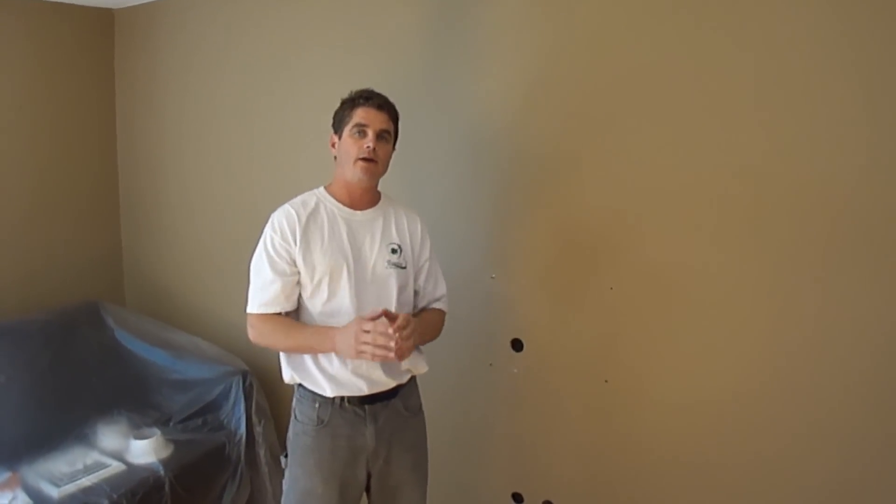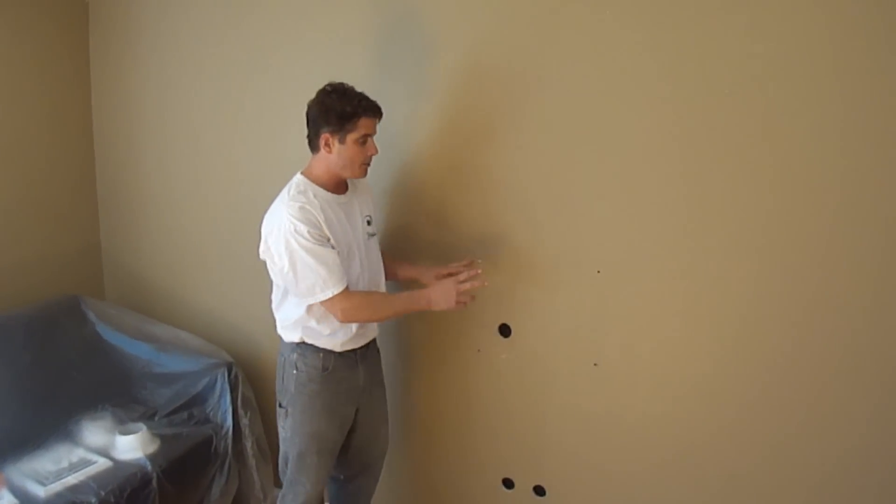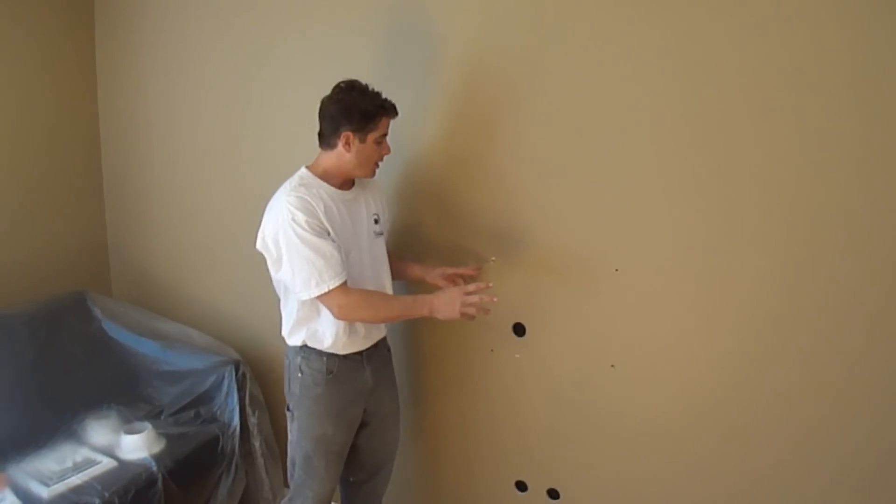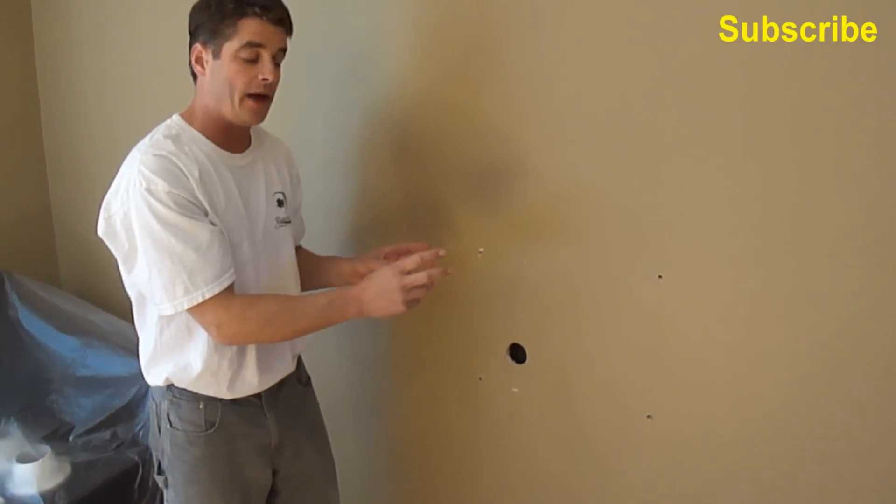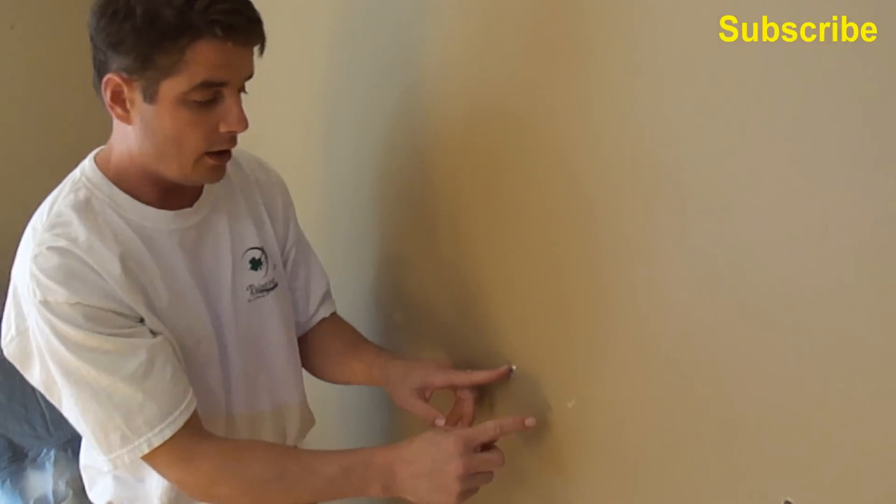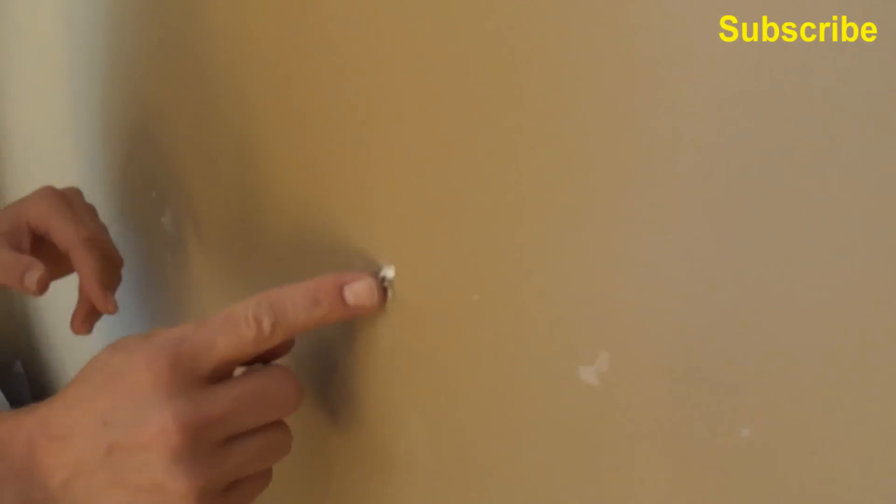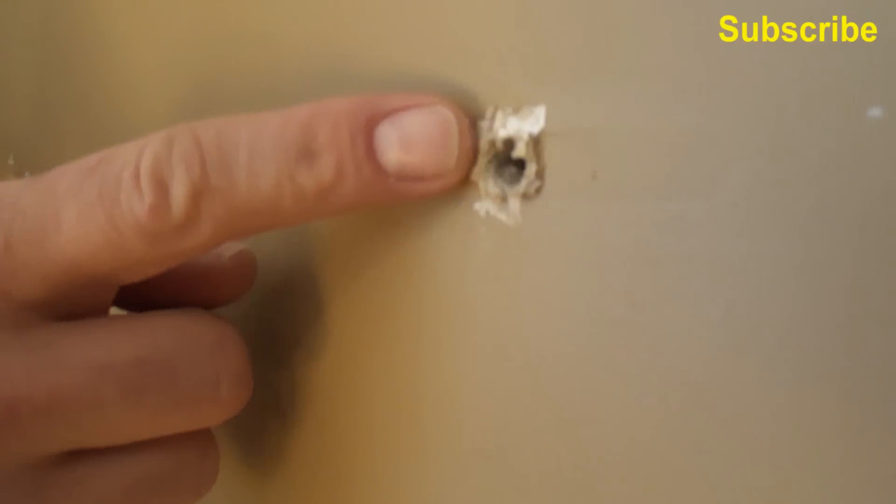Okay, so while we're back here in this project, what we're going to be dealing with is there was a big flat screen TV that was mounted to the wall here. And as you can see, when it was removed, the screws caused the drywall to lift up.